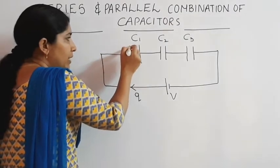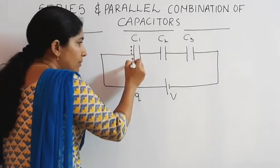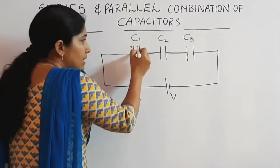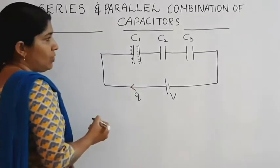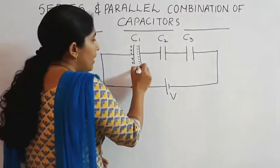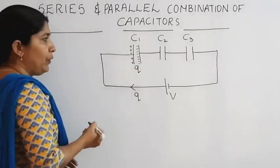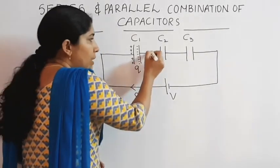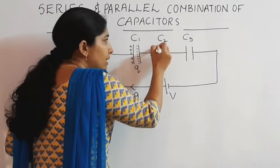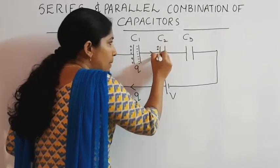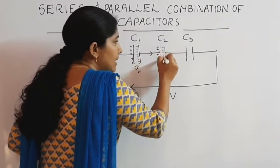When the charge reaches here, this plate attains positive charge. At the same time, by induction, the second plate attains negative charge. The charge present between the plates of the capacitors is Q. This charge again begins to flow through this, so that this plate attains positive charge and here it attains negative charge.